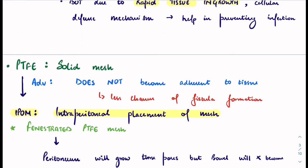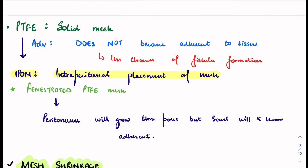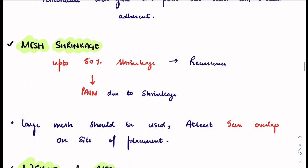PTFE is a solid mesh. Its advantage is that it does not become adherent to tissue, reducing chances of fistula formation. IPOM is intraperitoneal placement of mesh. Fenestrated PTFE mesh has pores through which the peritoneum can grow, but the bowel will not become adherent. This gives good peritoneal adherence while protecting bowel.